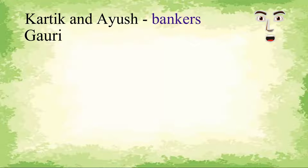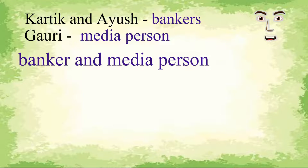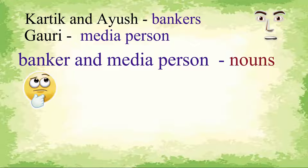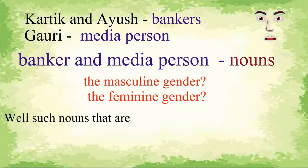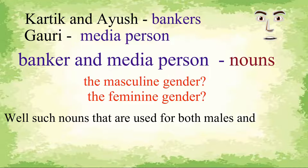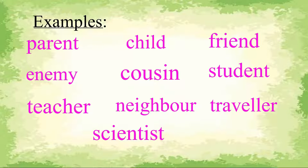In the conversation we heard, we saw that Karthik and Ayush are bankers and Gauri is a media person. We know that the words banker and media person are also nouns. But which gender do these words denote — the masculine or feminine gender? Well, such nouns that are used for both males and females are called common gender nouns. For example, please repeat after me: